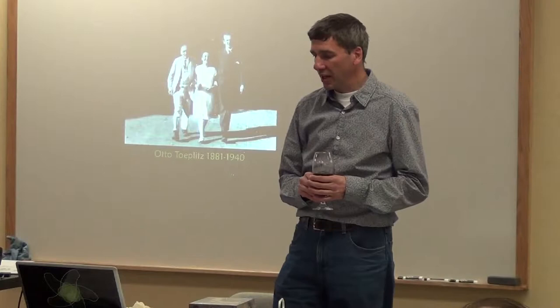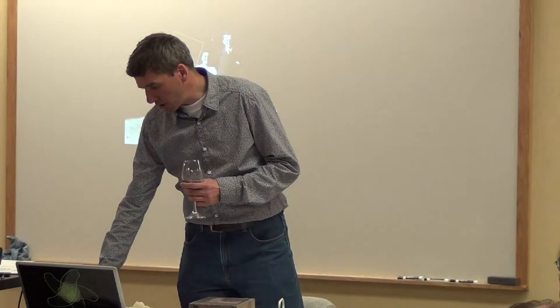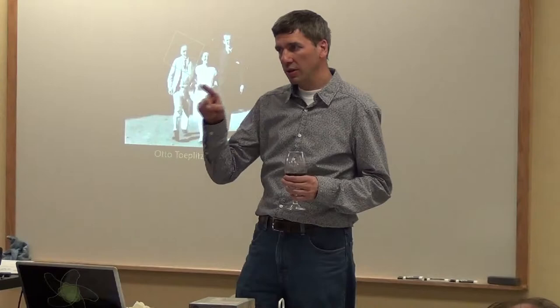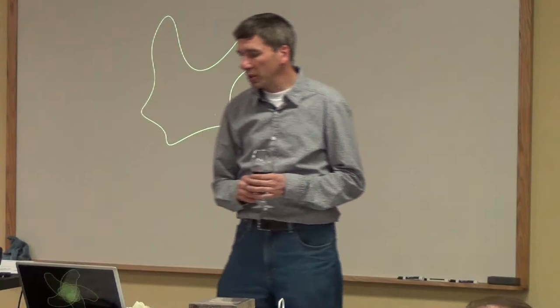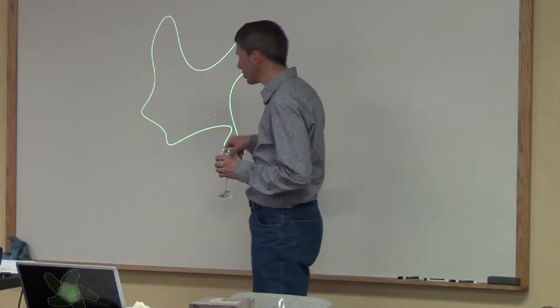It was in 1911, and Otto Toeplitz came up with the problem that is still unsolved today. Given any curve, any loop, for example this loop here, can you find a square where the four corners touch this loop?